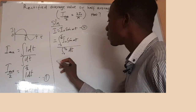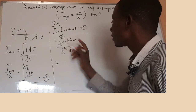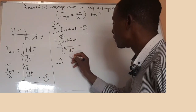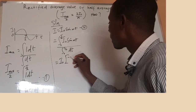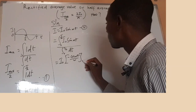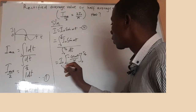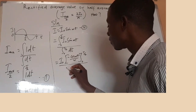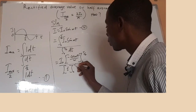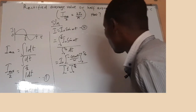So we just go straight and start to integrate. The constant I₀ will come out. When you integrate sin(ωt), you will have minus cos(ωt) all over ω, with the limit zero to T over two. All over: when you integrate dt you get T, with the limit zero to T over two.